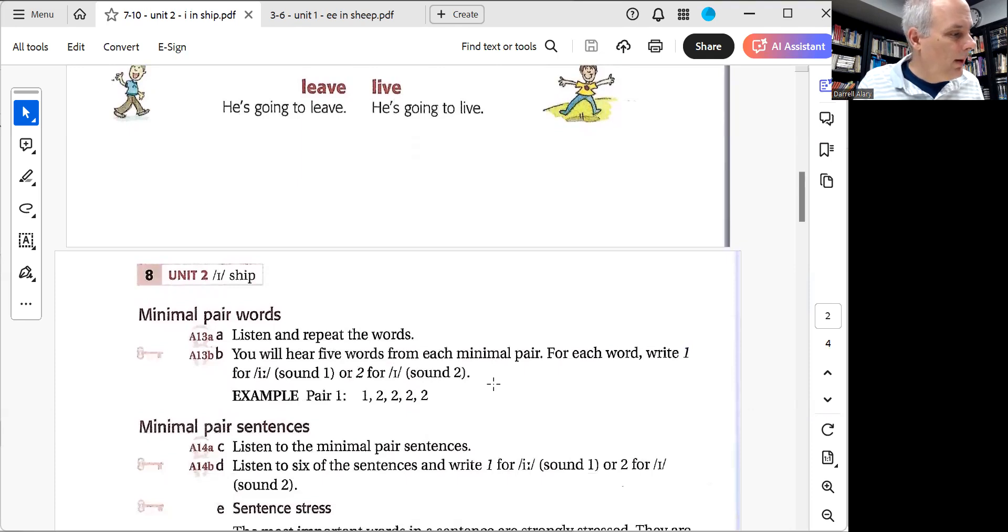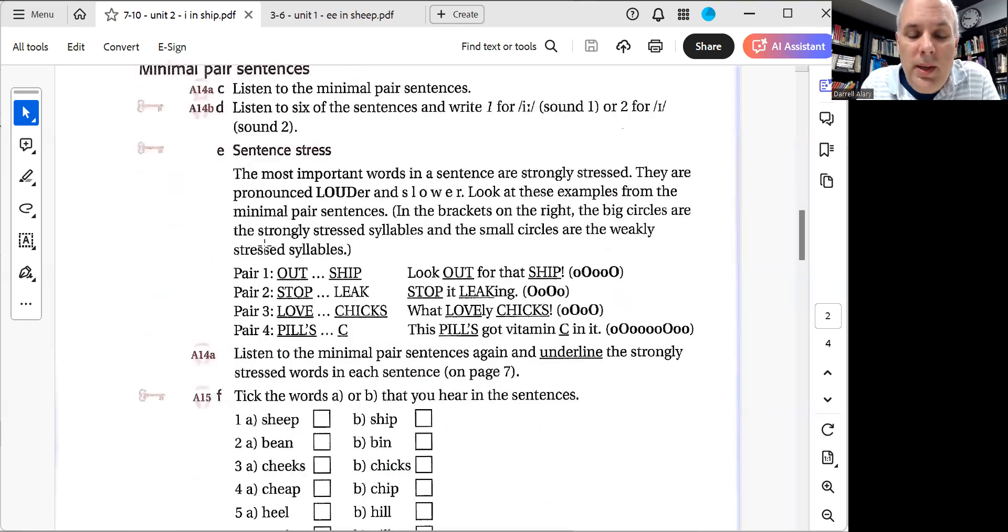Now next, the next thing we're going to do is E here. What they're trying to get you to practice here is that these sounds are the stressed sounds. The underlined sounds are going to be said a little bit slower than the other sounds and a little bit louder than the other sounds. This OUT and SHIP is going to be louder, as you can see in these O's here. These other ones are the other syllables, but they're going to be quicker and not as loud, quieter.